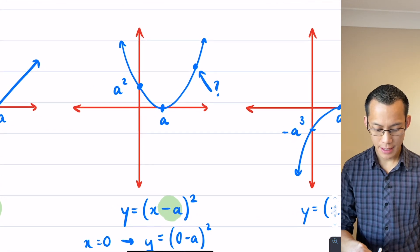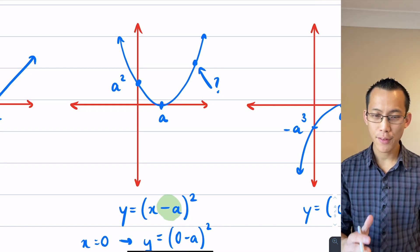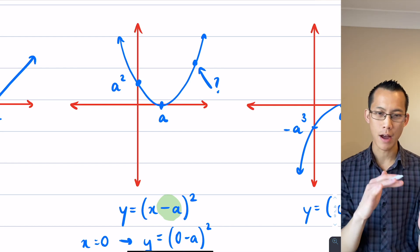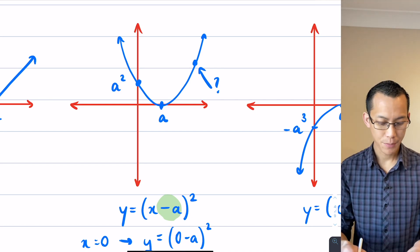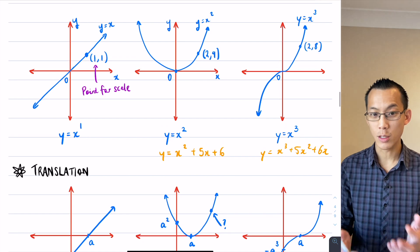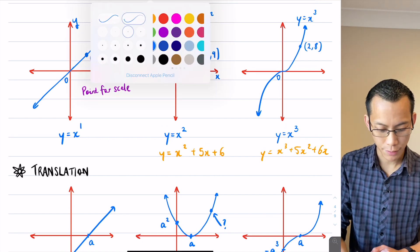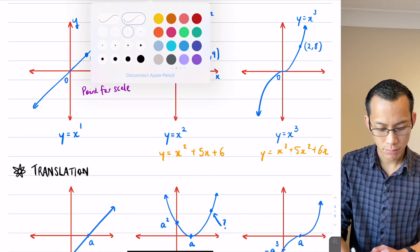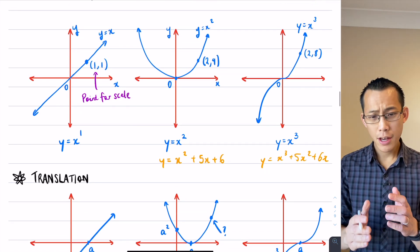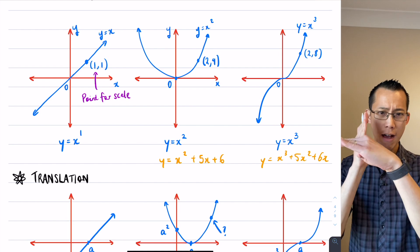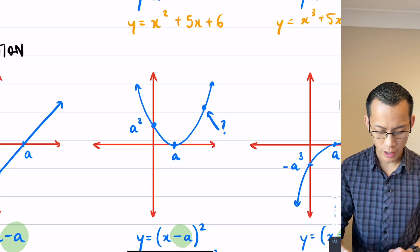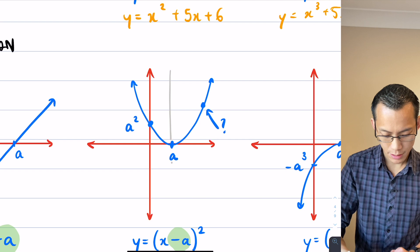When I see this x minus a, instead of thinking about the graph moving left or right, what I can think about is the coordinate axes moving left or right. If you think about where the coordinate axes used to be, I'm going to put them into a different color like this. Actually, this gray will be better. The coordinate axes used to be positioned so that the parabola had its vertex right at the origin. So in other words, putting it onto here, it used to look like this.